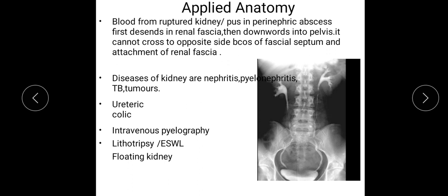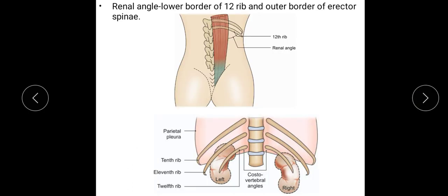In floating kidney, the kidneys move up and down within the renal fascia but do not move from side to side. The renal angle is the angle between the lower border of the 12th rib and the outer border of the erector spinae; it is important for surgical exposure of the kidney. The left kidney is related to the 11th and 12th ribs, and the right kidney to the 12th rib. When approaching from the posterior side, care must be taken to avoid injury to the parietal pleura.